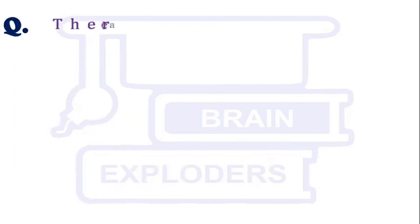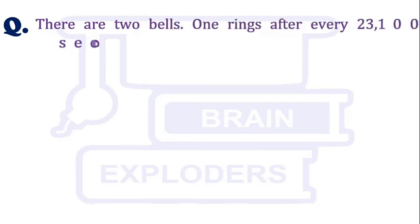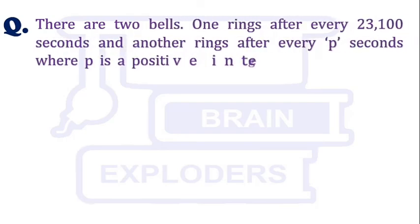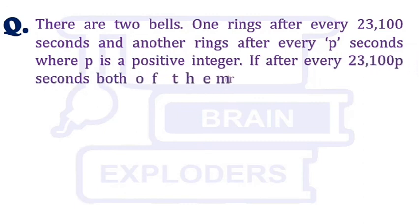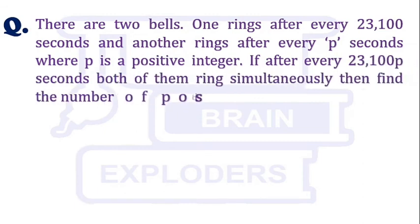There are two bells. One rings after every 23,100 seconds and another rings after every p seconds, where p is a positive integer. If after every 23,100p seconds both of them ring simultaneously, then find the number of possible values for p.